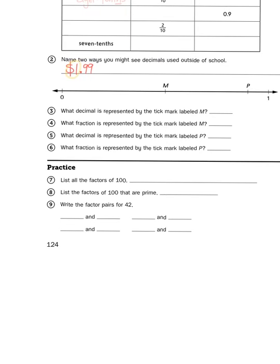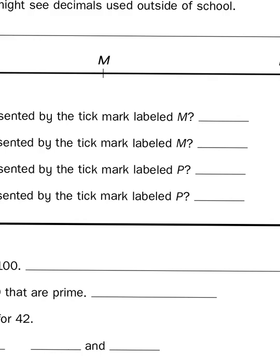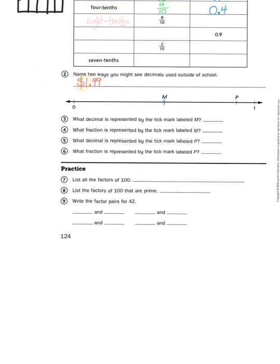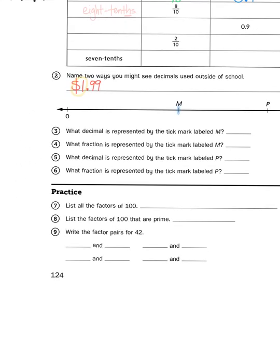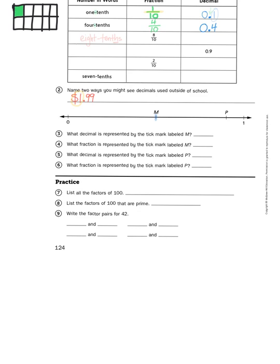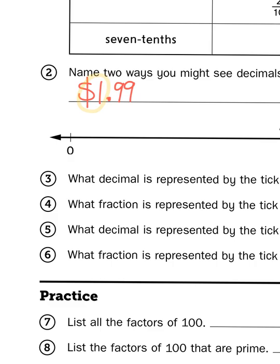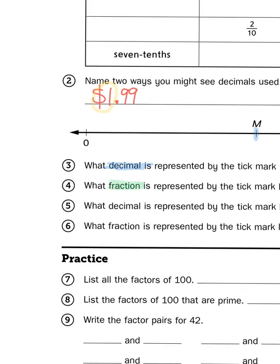Now, we have a number line that we need to consult for problems 3, 4, 5, and 6. It says, what decimal is represented by the tick mark labeled M? That little hash mark or that little line right there. If the left-hand side of my number line is 0 and my right-hand side is 1, where is M? Well, just by looking at it, that looks to be roughly 1 half. But wait, Mr. Wassman, the first question is not what fraction. It says what decimal. Well, right below it, it says fraction. So, let's think about that one first.